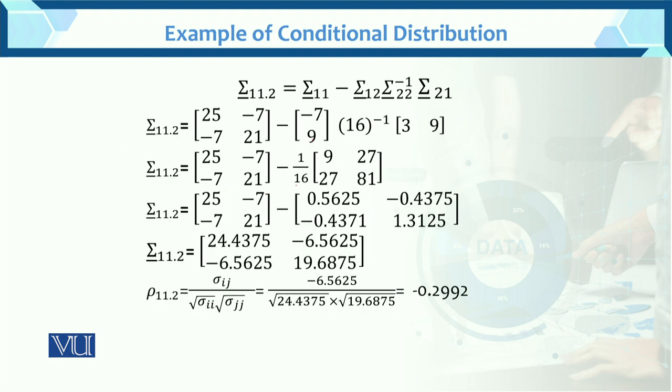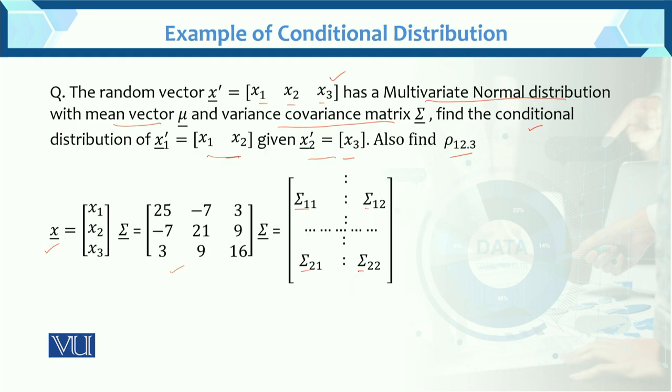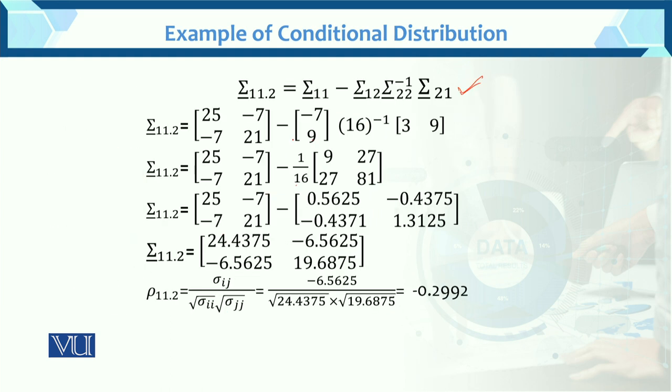Further, abhumne iska kya find karna hai? So, the variance covariance matrix is sigma 11.2. This is the conditional. And this is the conditional which equals the x1, x2 given x3. So, these are the values of sigma 11. We know the value of sigma 11, sigma 12, 22 inverse and sigma 21. Now, put these values in sigma 11.2.